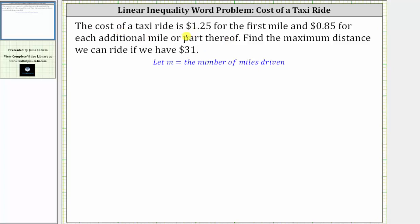The first mile has a cost of $1.25, which gives us 1.25. And then each additional mile has the cost of 85 cents per mile. Because the first mile has a different cost, the number of miles driven at a cost of 85 cents per mile is going to be m minus one, which gives us 1.25 plus 0.85 times the quantity m minus one.